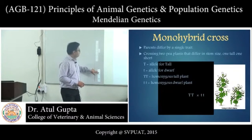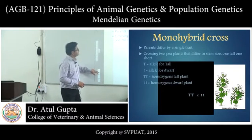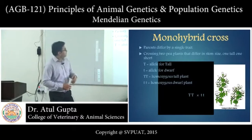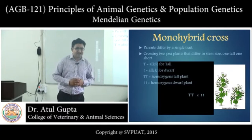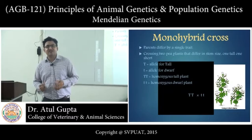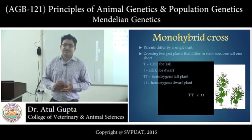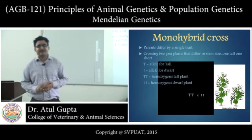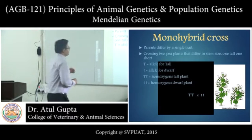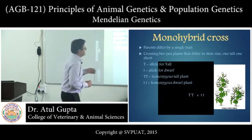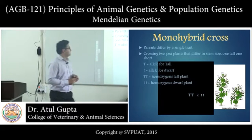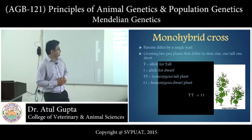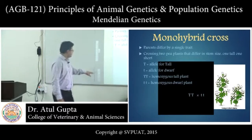In a monohybrid cross, parents differ by a single trait — a single trait is taken at a time. We cross two plants that differ in stem size: one tall and one short. Capital T is the allele for tallness and small t is the allele for shortness.